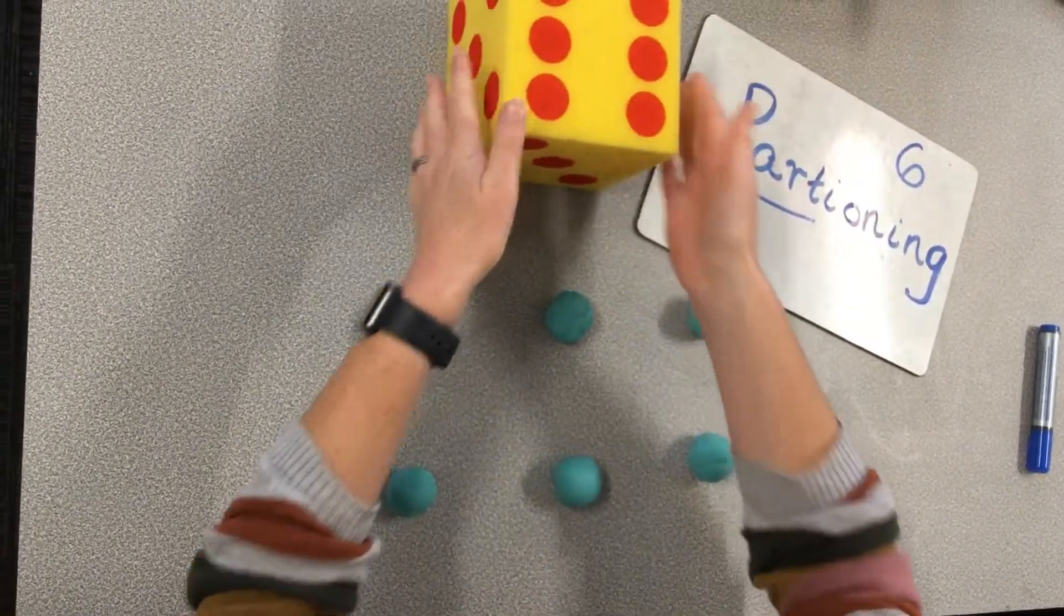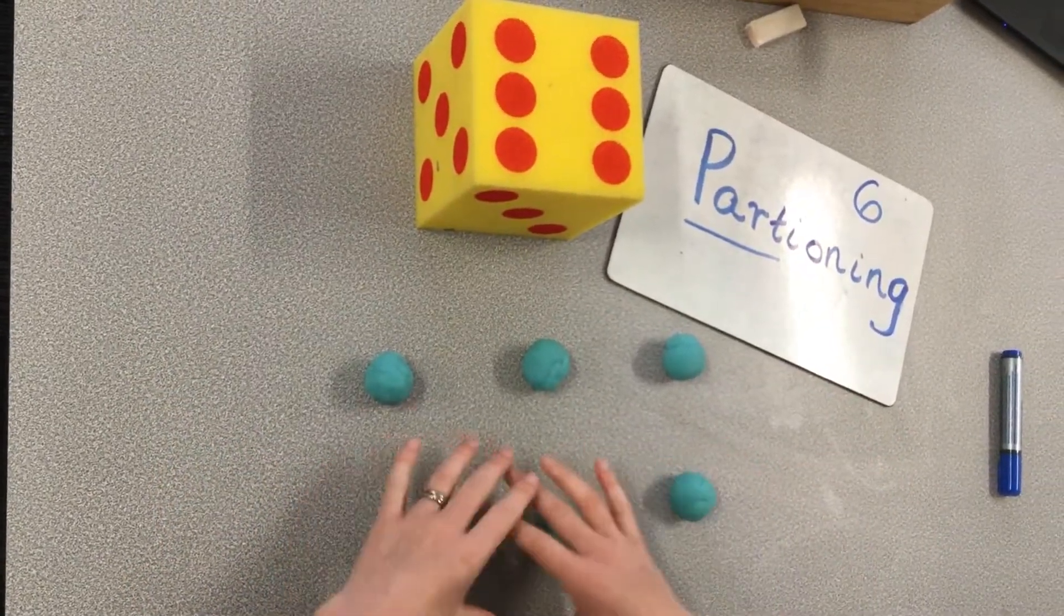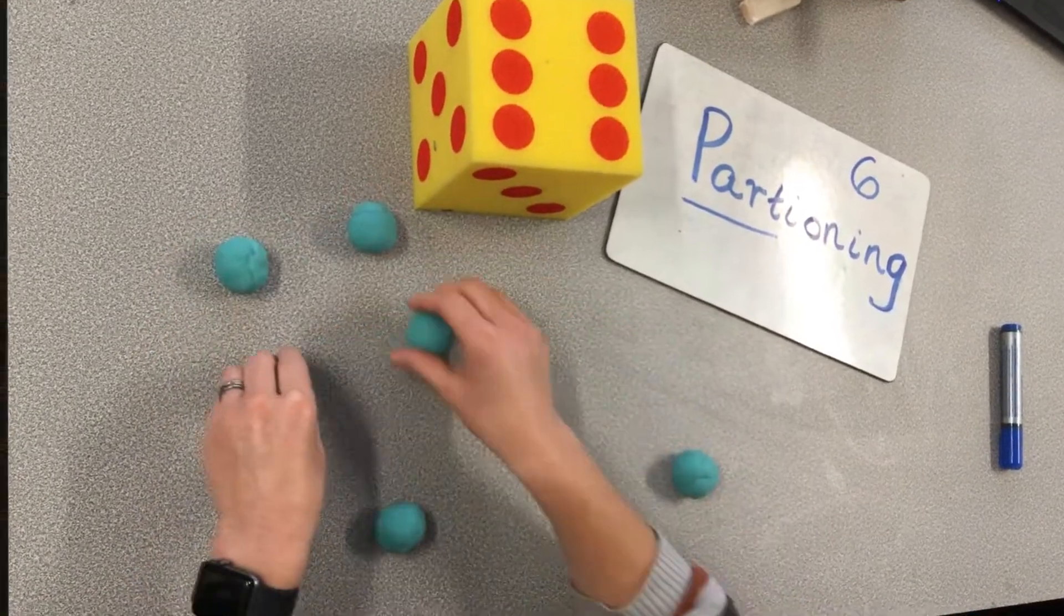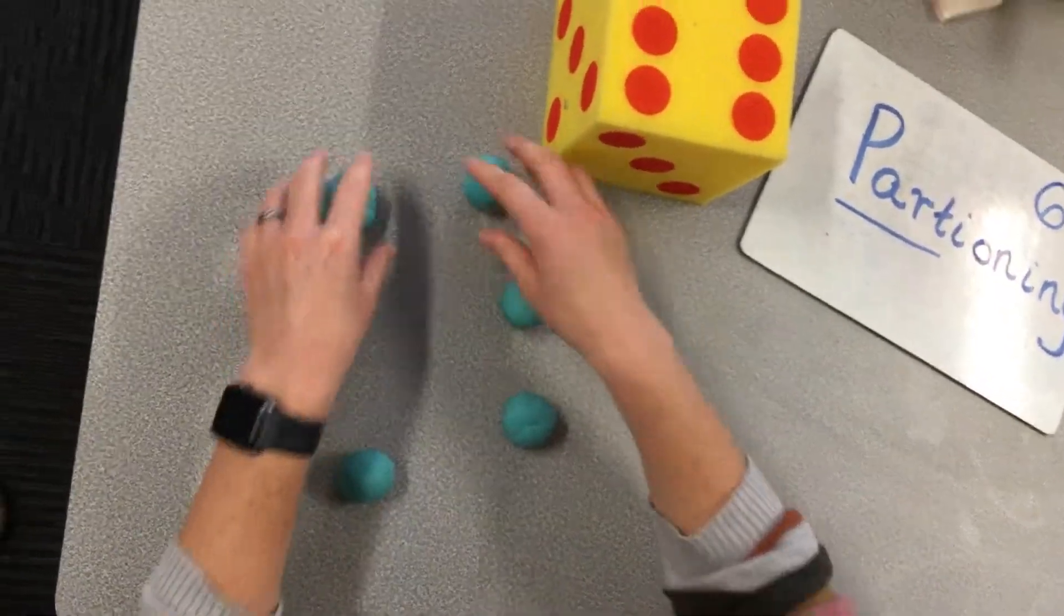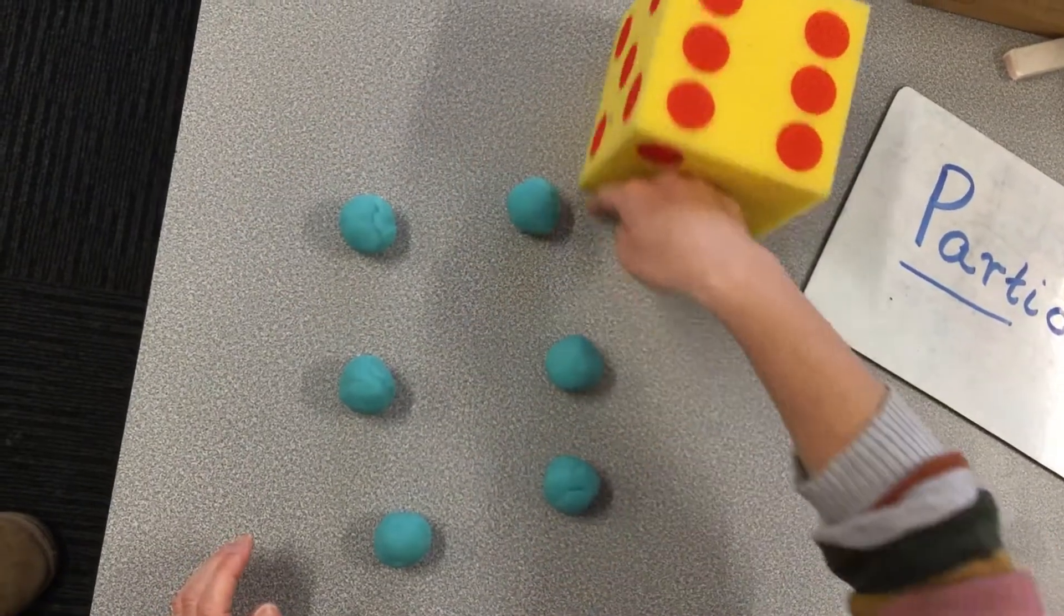But I wonder if there's any other way that we can break apart the number six. So here, this also looks like a group of—I might do it the same way as the dice so it's not confusing. We've got our group of three there and a group of three there.